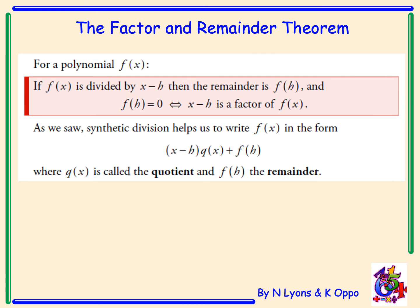The Remainder and Factor Theorem: for any polynomial, if f(x) is divided by x - h, we have a remainder f(h). If we put h into the function and get 0, we can assume that x - h is a factor. We can use synthetic division to write a function in the form: (x - h) × quotient + remainder f(h).